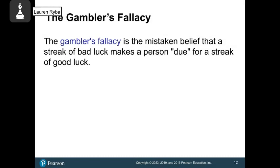One thing that can happen, as we know in real life, is that what we expect to happen doesn't. So there is this concept called the gambler's fallacy, and it's the mistaken belief that after a streak of bad luck, someone is due for a streak of good luck.